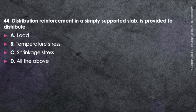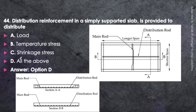Next question: Distribution reinforcement in a simply supported slab is provided to distribute load, temperature stress, and shrinkage stress — all of the above. In a slab, main reinforcement is provided along the shortest span, and distribution reinforcement is provided along the larger span. It distributes the load and also counteracts temperature and shrinkage stresses.